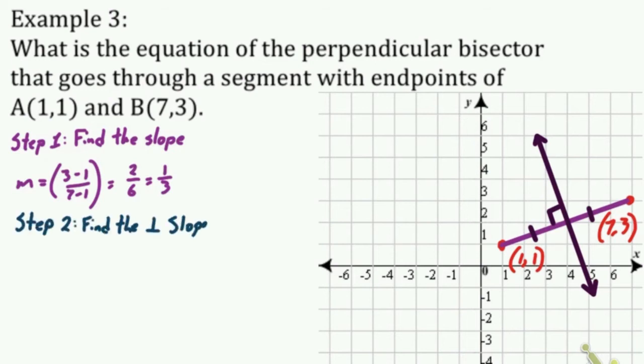So step 2 is find the perpendicular slope. So I know the slope of this line segment here. Now I can find this slope. And the perpendicular slope is going to be the negative reciprocal. So negative means you change the sign, and reciprocal means you flip it. So it's going to be negative 3 over 1, or negative 3.